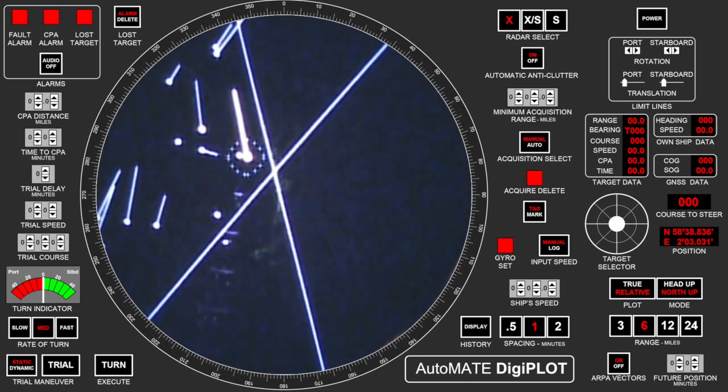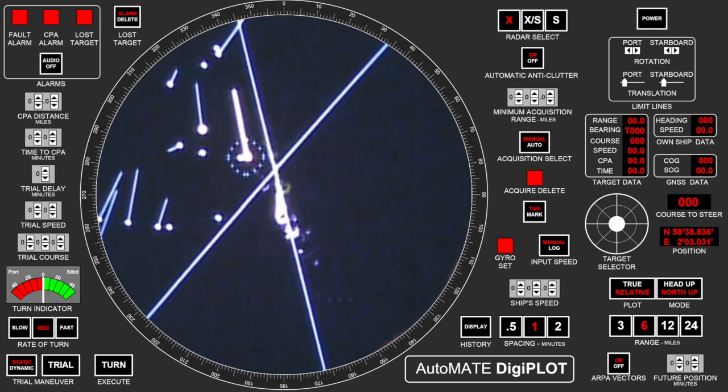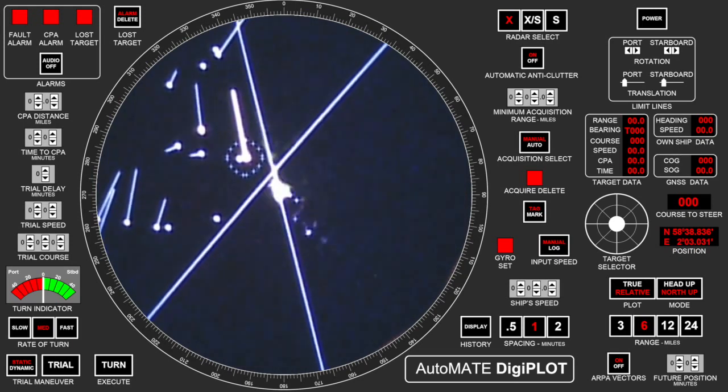That's because frequently a watch officer doesn't adjust the anti-sea clutter well enough and there would be some swapping or false echoes acquired there. This means we don't acquire at all automatically inside that dotted circle.